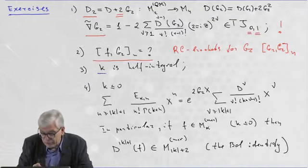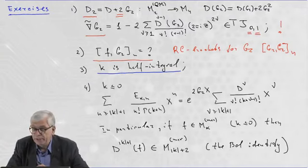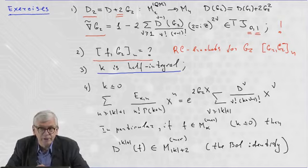Try to modify all this formula for half integral K. In particular, you get Rankin-Cohen brackets for half integral.